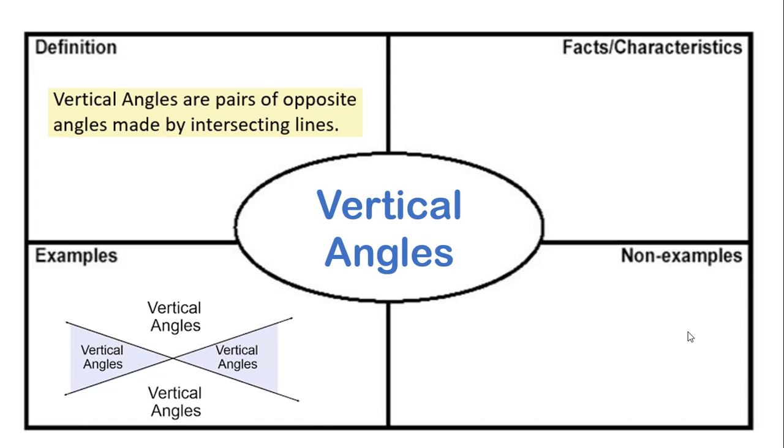Under characteristics, you want to sort of list out the things that are true about the word or the concept. What makes them, what helps you recognize them. So here are some things to remember. They do come in pairs. You have to have a pair of vertical angles.